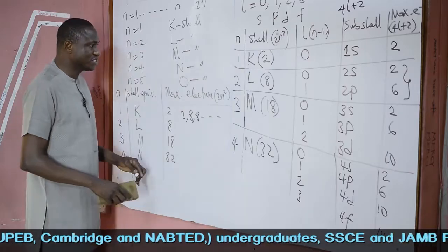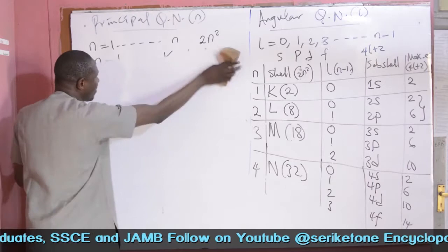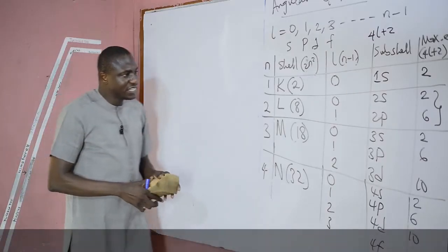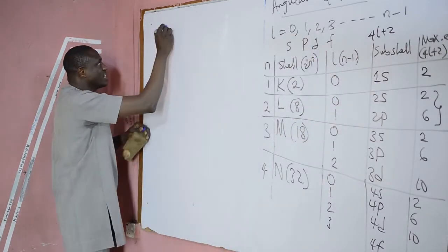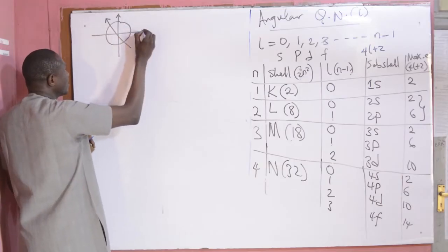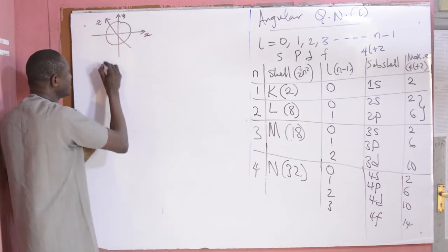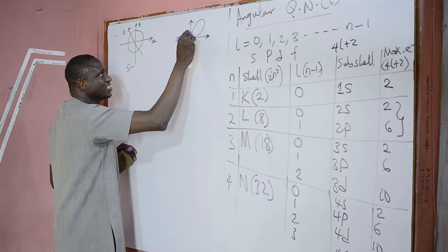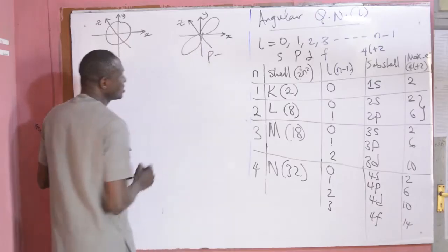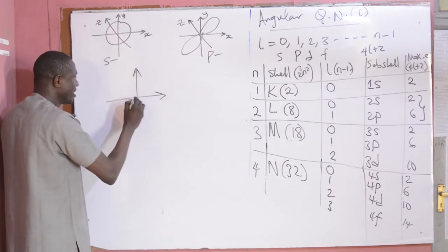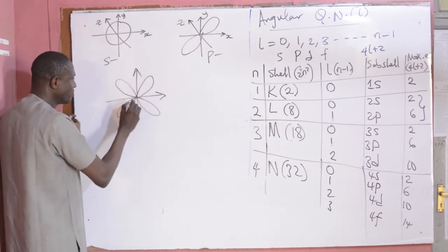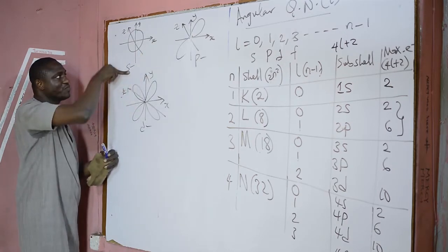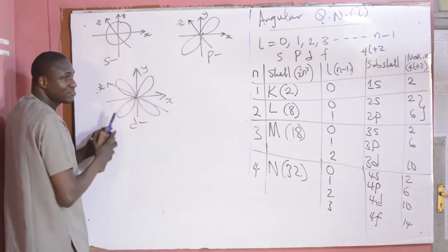Now, the third quantum number is the magnetic. But before we go to magnetic, the shapes of the first three sub-shells are very important. The shape of S sub-shell is spherical in nature — along the Y, Z, and X axes. For P sub-shell, it has a dumbbell shape along the Y, Z, X axes. While for D sub-shell, we have a double dumbbell shape. You can see that P is double of S, while D is double of P — that's why we call it double dumbbell.